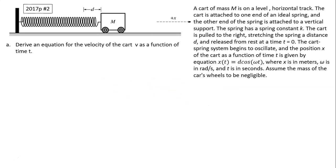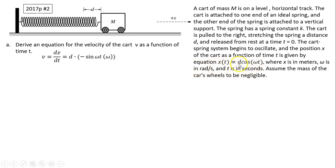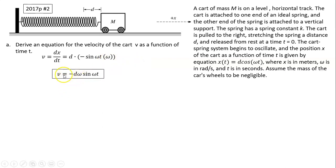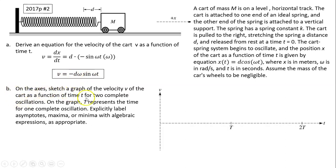Part A: Derive an equation for the velocity of the card v as a function of time. Since v = dx/dt, we take the derivative of the x function. d is a constant, the derivative of cosine is negative sine, and applying the chain rule we get an additional factor of ω. So v equals negative d·ω·sin(ωt).